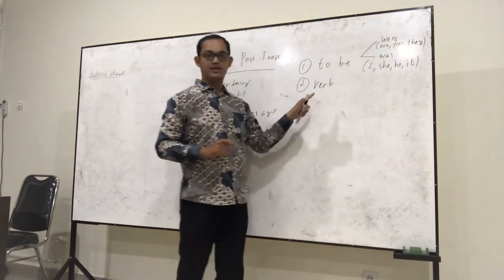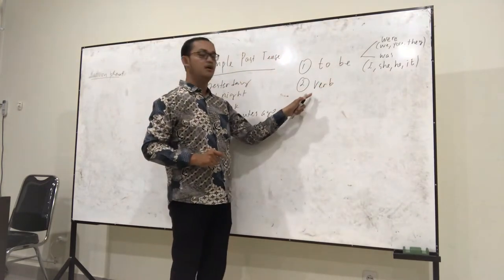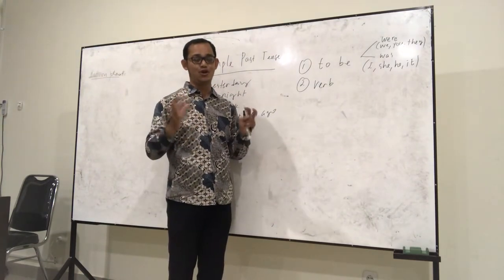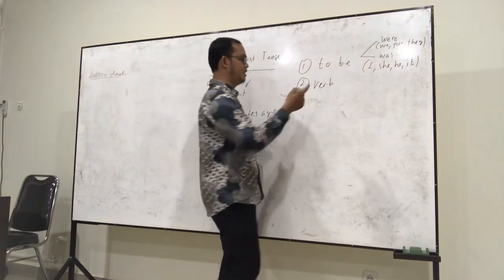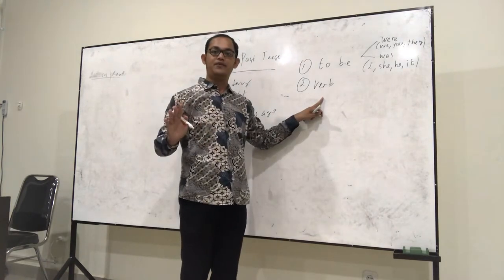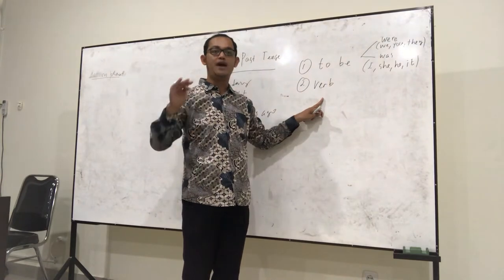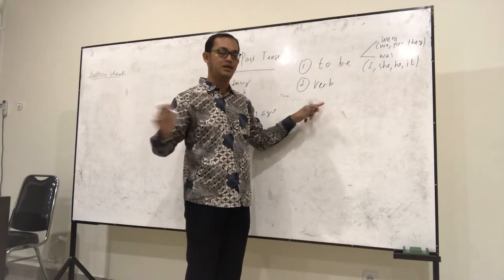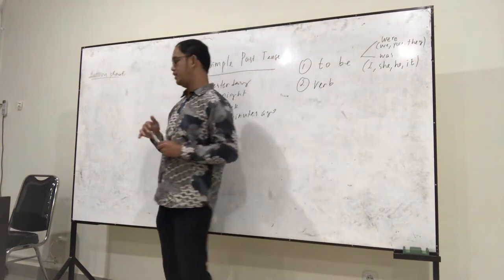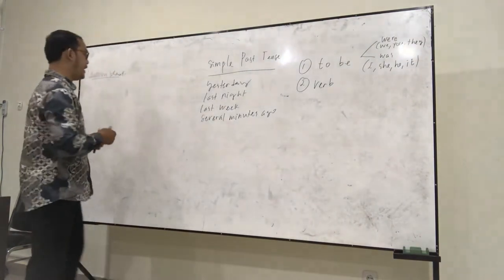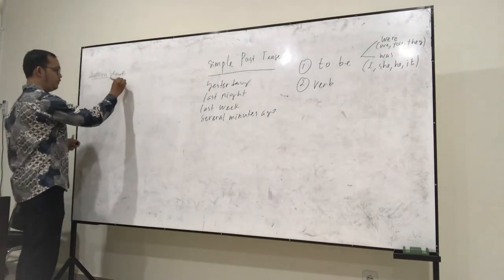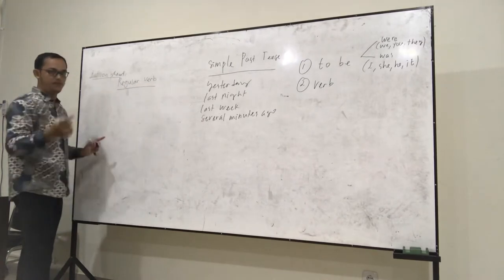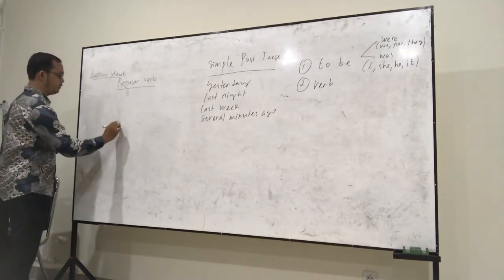Now we focus on the second formula, called the verb formula. This is also not complicated — it's very easy. In the verb formula, the very first thing we have to know is that we have to be able to differentiate between verb one, verb two, and verb three. In English, we have regular verbs and irregular verbs.